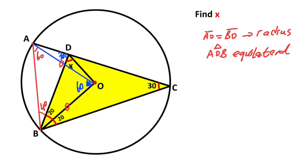To see this more easily, let's color the same sides in red. Therefore this side, this side, and this side are all equal.